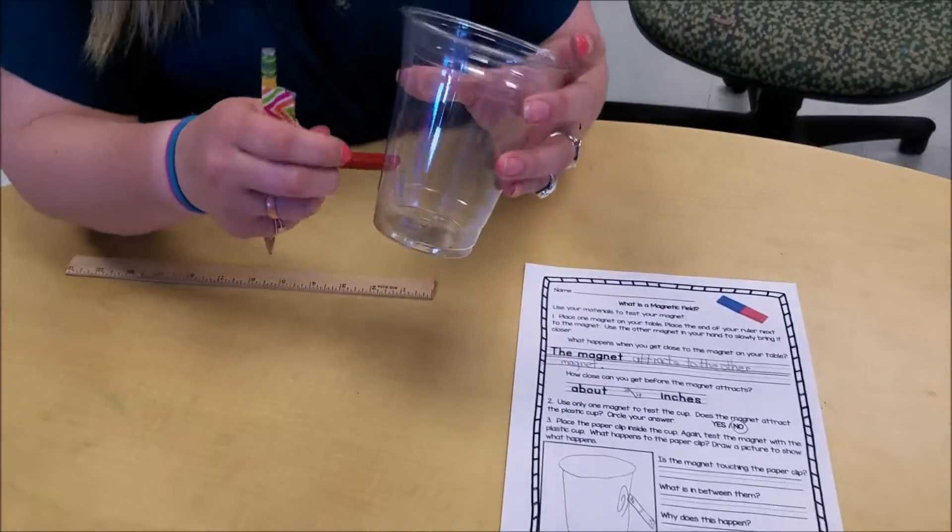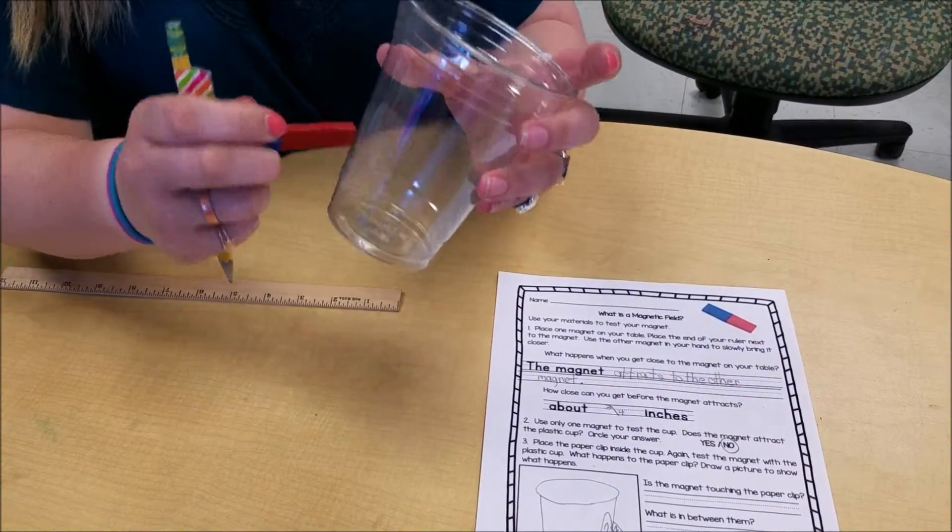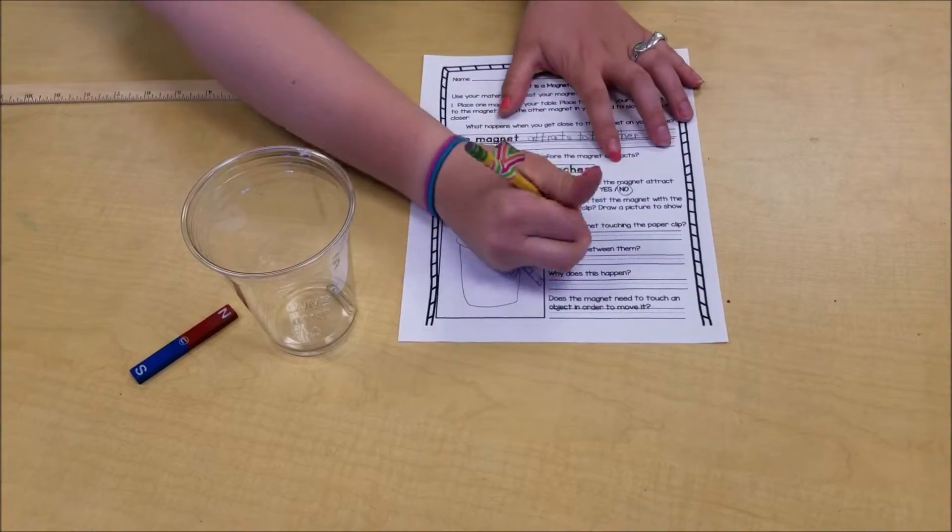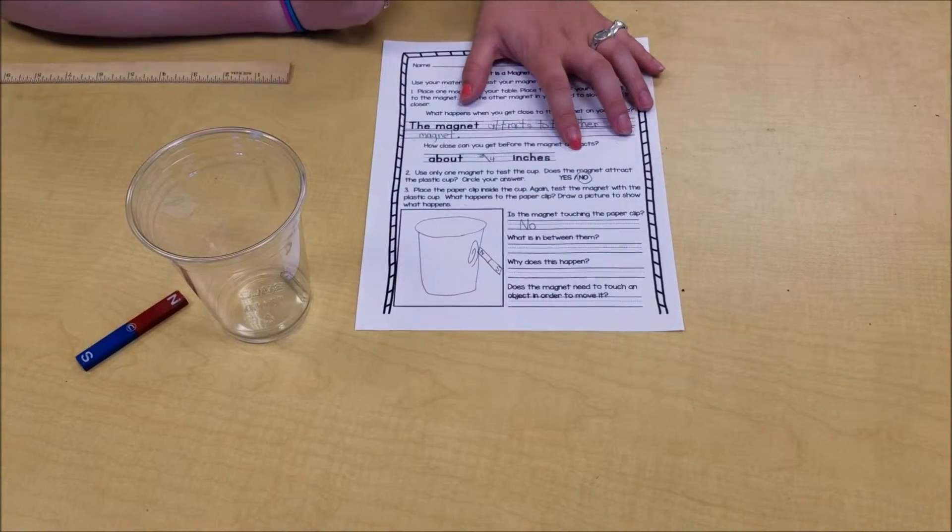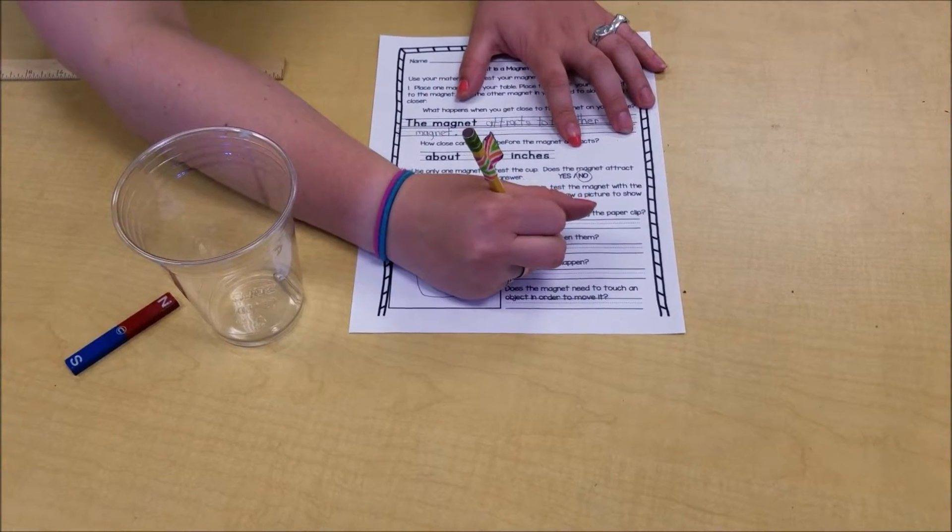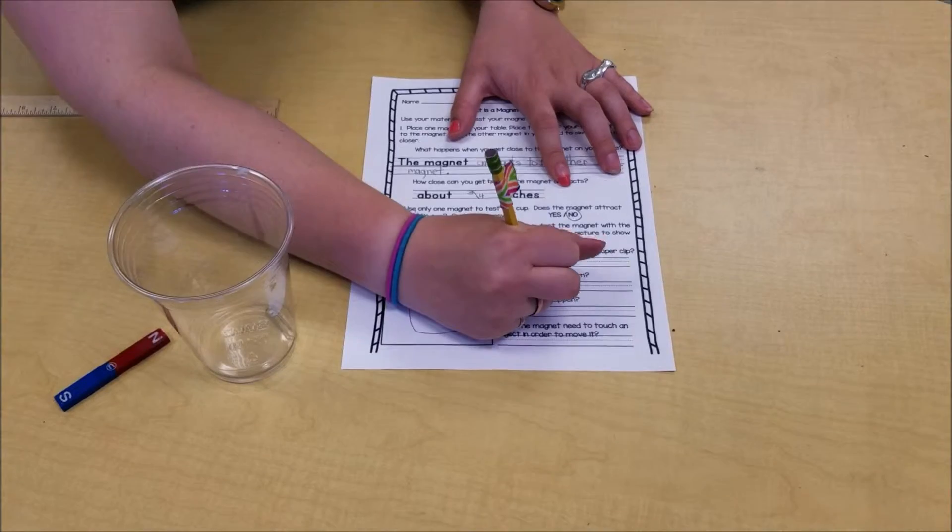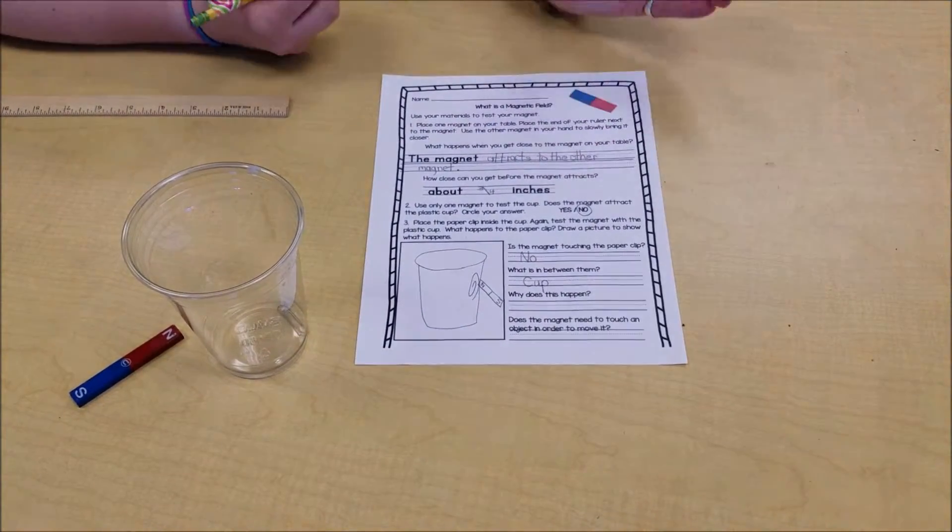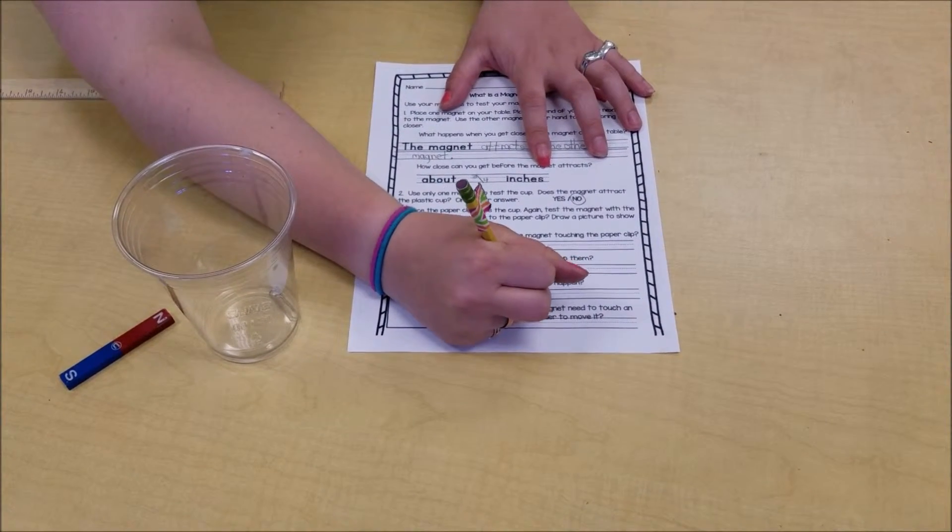So it says is the magnet touching the paper clip? No, I don't think it is. What's in between them? Well, for this one the cup was in between it. And why does this happen? Well, we just talked about magnetic field, so I think it's the magnetic field that goes through the cup.